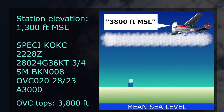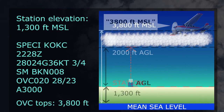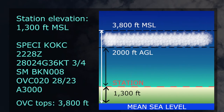On the other hand, ground-based reporting stations such as those that generate METARs give heights in AGL. This is because their sensors emit signals upward starting from ground level. Now we have all our heights illustrated and it's time to start calculating.